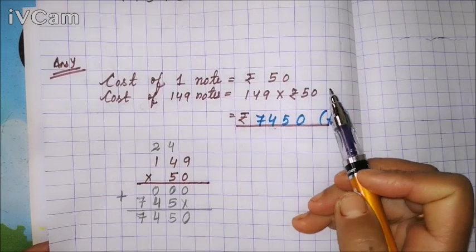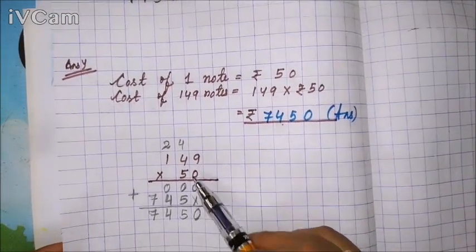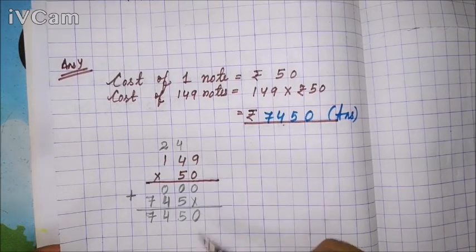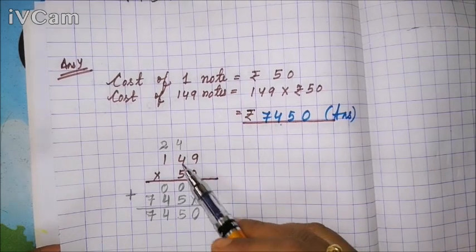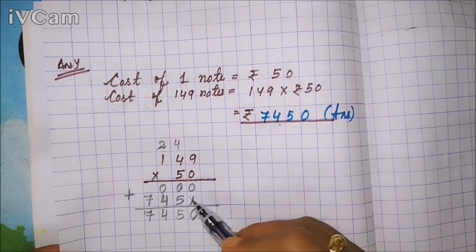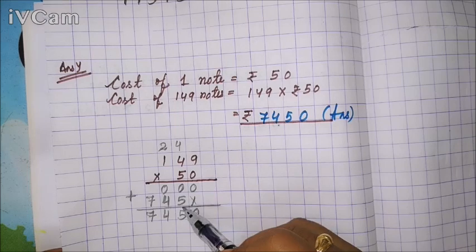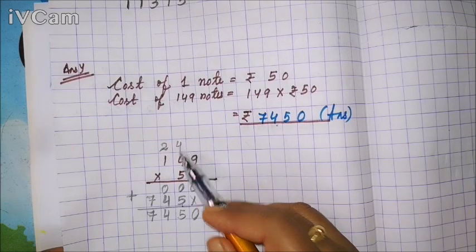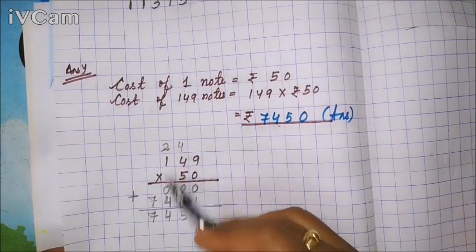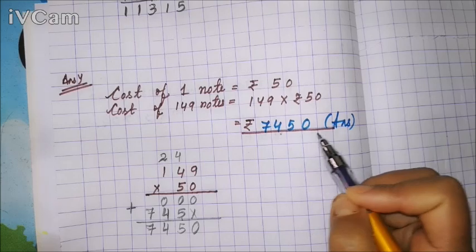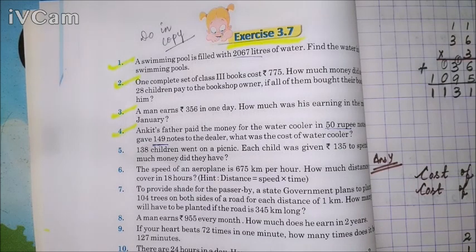Write: cost of one note = 50 rupees. Cost of 149 notes = 149 × 50 rupees. When multiplying by 0, all digits give 0. Then starting from the tens place, multiply by 5: 5 × 9 = 45, write 5 carry 4. 5 × 4 = 20 + 4 = 24, write 4 carry 2. 5 × 1 = 5 + 2 = 7. Add both rows.